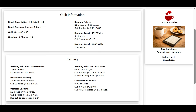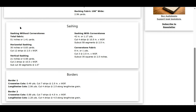This gives you the binding fabric you need for that quilt and the backing fabric for 45-inch wide and for 108-inch wide. Here's our sashing information, and you have two choices: sashing without cornerstones — here's the fabric requirements and the cutting instructions — and sashing with cornerstones, with the sashing part and the cornerstone fabric part. And we only had two borders, so it will list the crosswise cuts and the lengthwise cuts, depending on which way you want to cut your borders, for borders one and two.